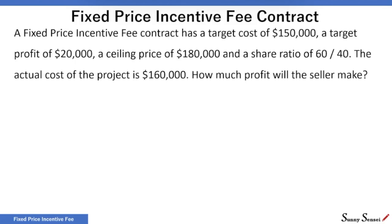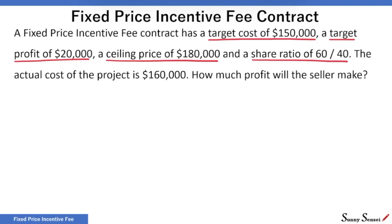Our first question is on the screen. A fixed price incentive fee contract has a target cost of $150,000, a target profit of $20,000, a selling price of $180,000, and a share ratio of 60 to 40. The actual cost of the project is $160,000. How much profit will the seller make?